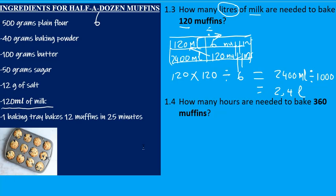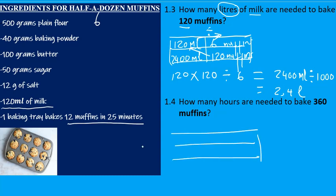Question 1.4: How many hours are needed to bake 360 muffins? This time we're dealing with time. The tray doesn't take 6 muffins — it actually takes 12 muffins, and 12 muffins can be baked in 25 minutes. Let's put that into the table: 12 muffins baked in 25 minutes.